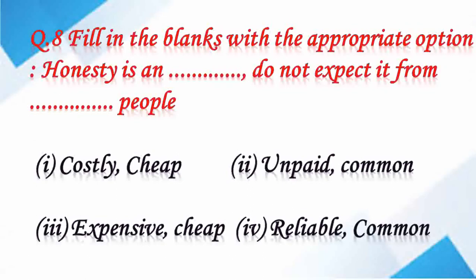Question number 8: fill in the blanks with the appropriate option. Honesty is dash and dash. Do not expect it from dash pupil. We do not expect honesty from cheap pupil. From option 1 or 3, any one might be correct. Option 2 and 4 are not correct because unpaid and reliable do not match with honesty.